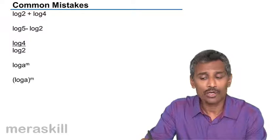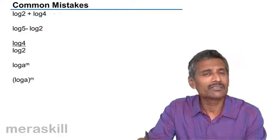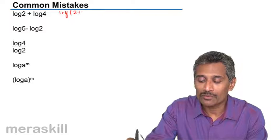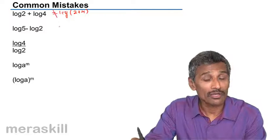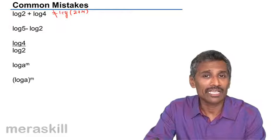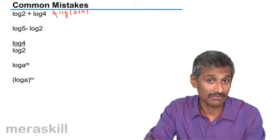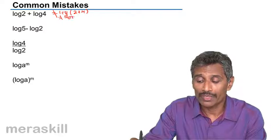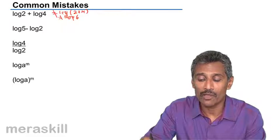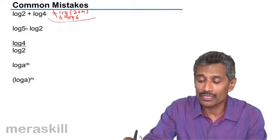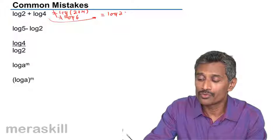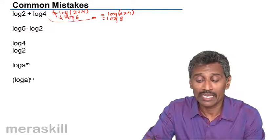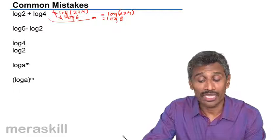For example, we have log 2 plus log 4. We have a tendency to use distributive log-taking and write log(2 + 4), which is definitely wrong. Log by itself does not have any identity — it has to be the log of some number. So it's not equal to log(2 + 4) or log 6. What we need is the rule: log a + log b = log(ab), so this is actually equal to log(2 × 4) = log 8.